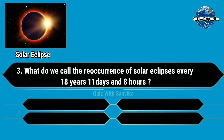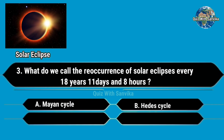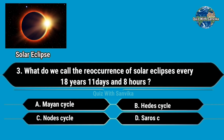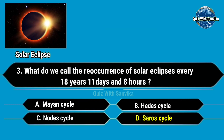What do we call the reoccurrence of solar eclipses every 18 years, 11 days and 8 hours? Options are A. Mind Cycle, B. Head Cycle, C. North Cycle, and D. Saros Cycle. Answer is D. Saros Cycle.